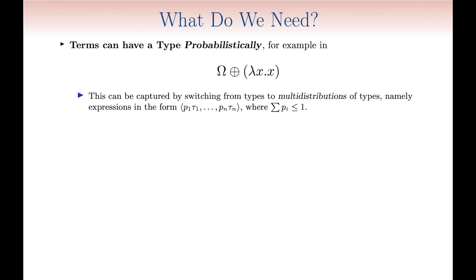This is naturally captured by distributions of types, which in this paper are taken in their non-idempotent version, called multidistributions. They are multisets of pairs consisting of a type and a rational probability. This way, all axioms of a barycentric algebra hold, except one, namely weighted idempotency.